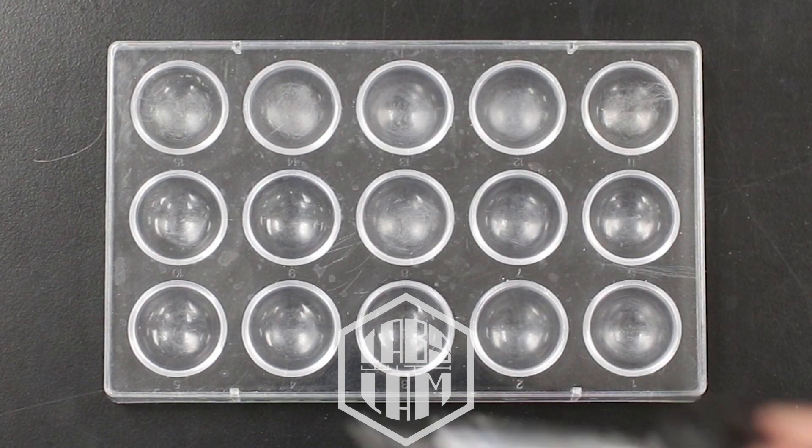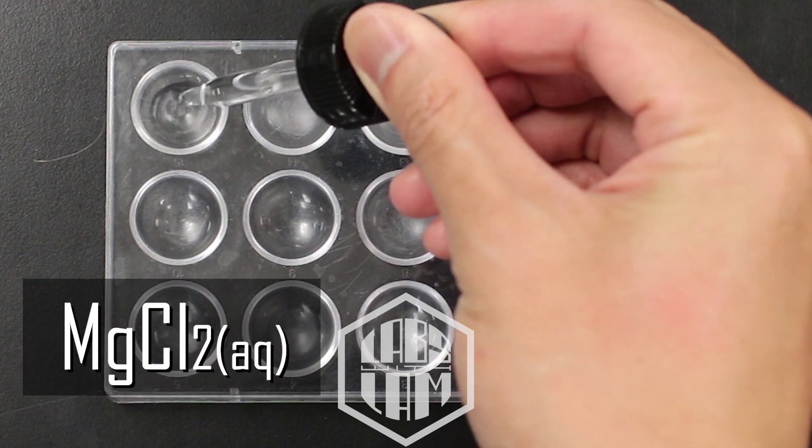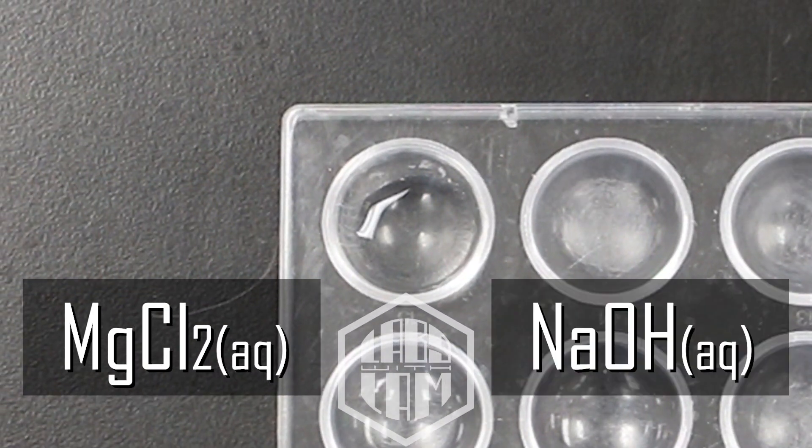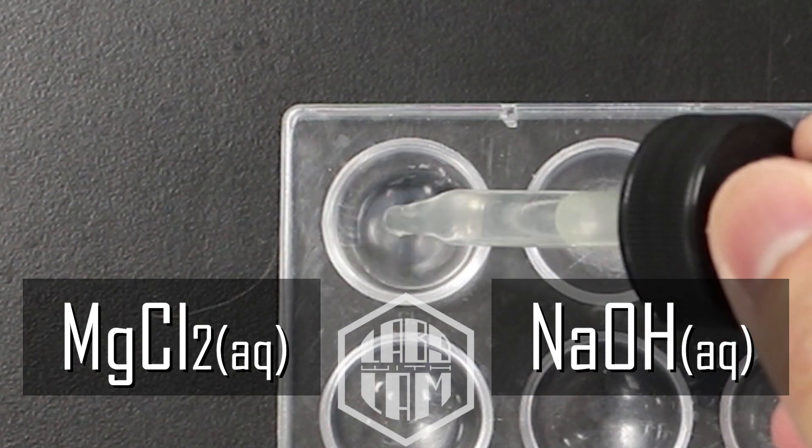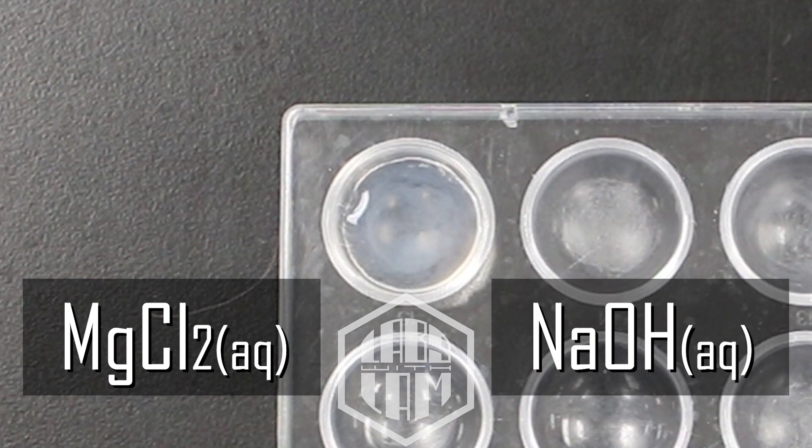All right, so let's get started with these reactions. First up, we are putting in a few drops of magnesium chloride. And to that, we'll be adding sodium hydroxide. Try to be as descriptive as possible with your observations here, even if it doesn't look like there's a huge change.